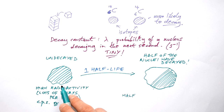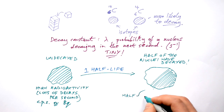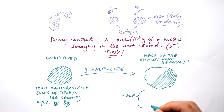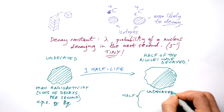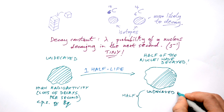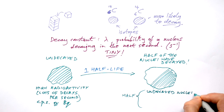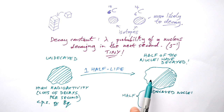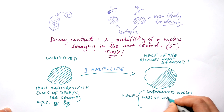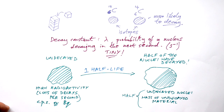So what's halved from here to here? Well, three things actually: half the undecayed nuclei — notice we say undecayed nuclei, not the number that have decayed — the mass of undecayed material, and then finally, but most importantly, the radioactivity is halved.